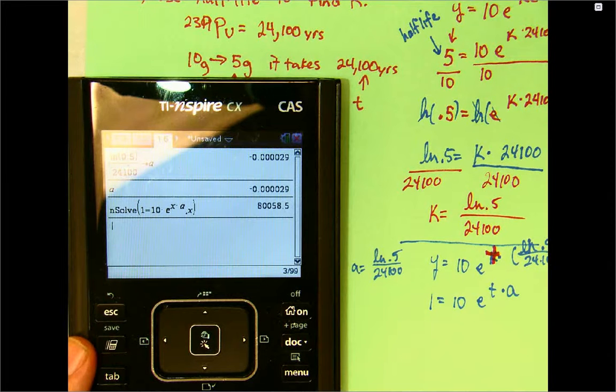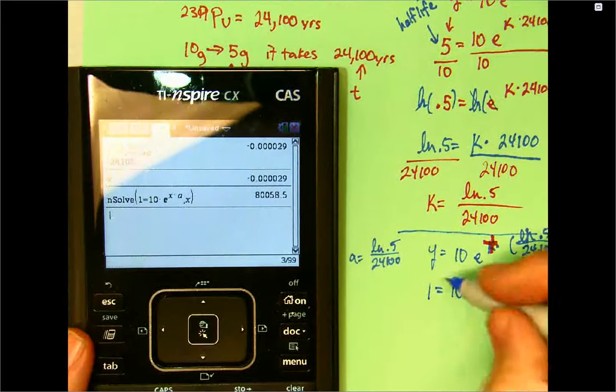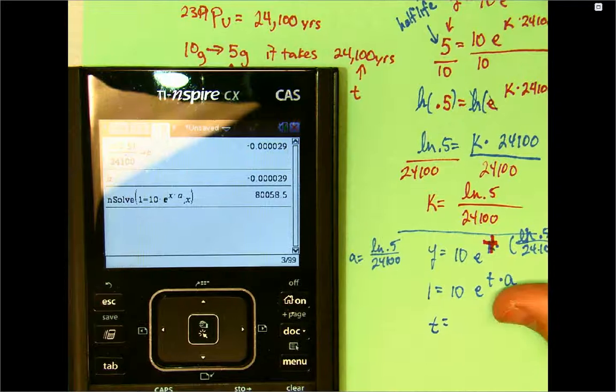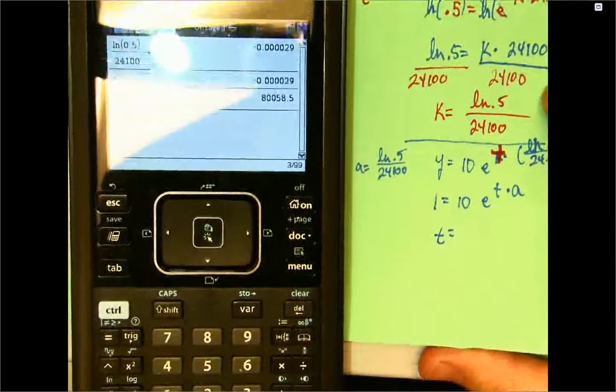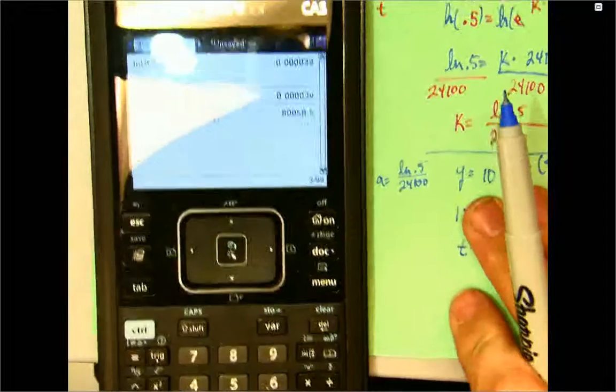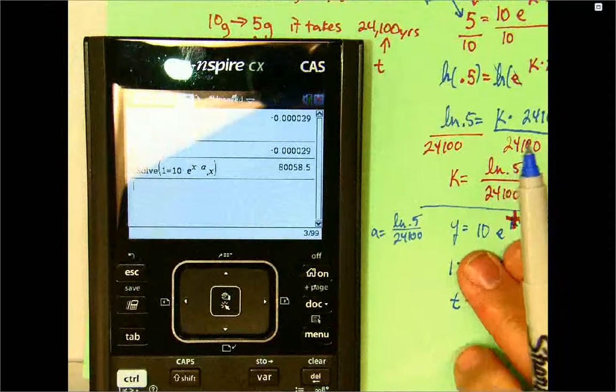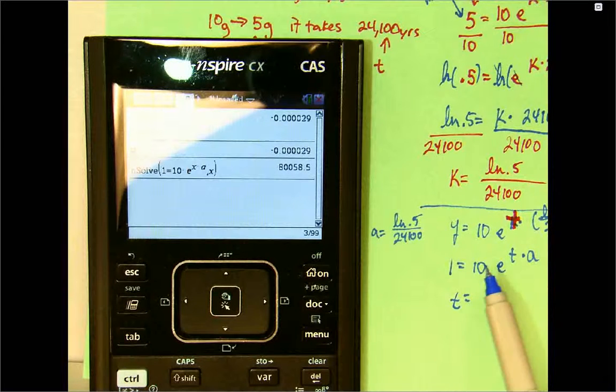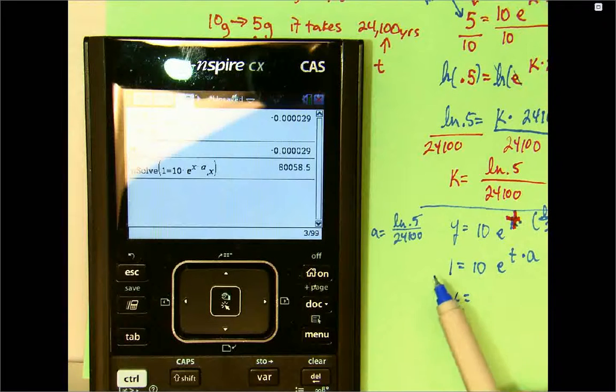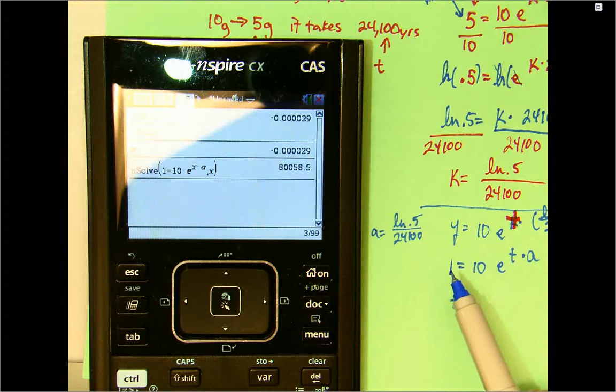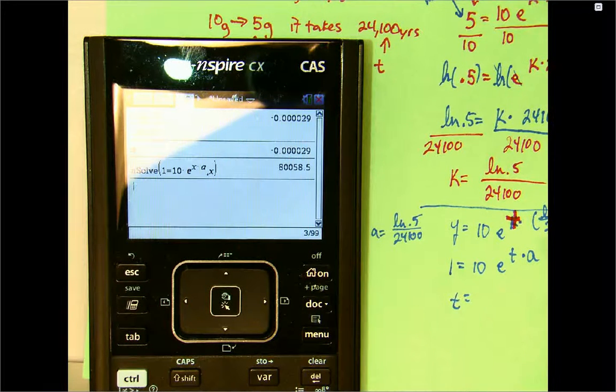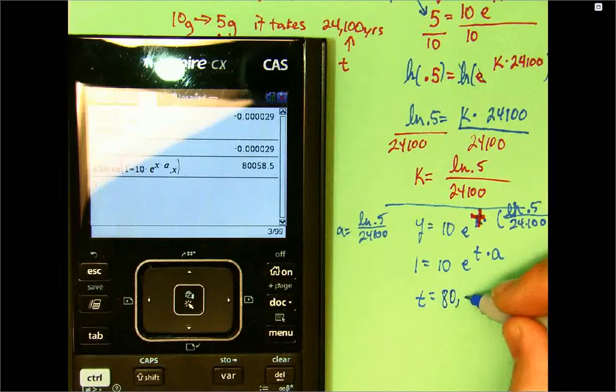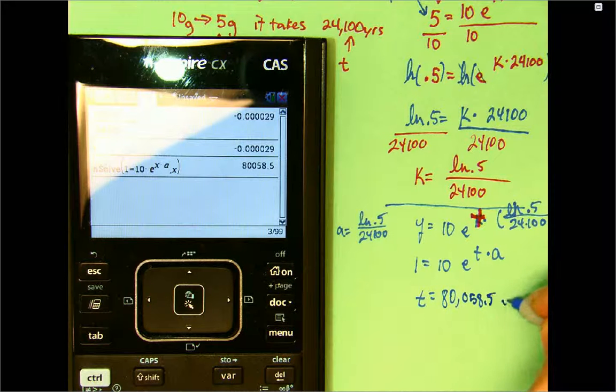So, T, you could use natural log again. 1 divided by 10. Let me kind of move that over here. The glare is just terrible up here. 1 divided by 10. You could have done 1 divided by 10, then take the natural log of both sides. Natural log of 0.1 divided by A. You would have still got 80,058.5 years. So, 80,058.5 years.